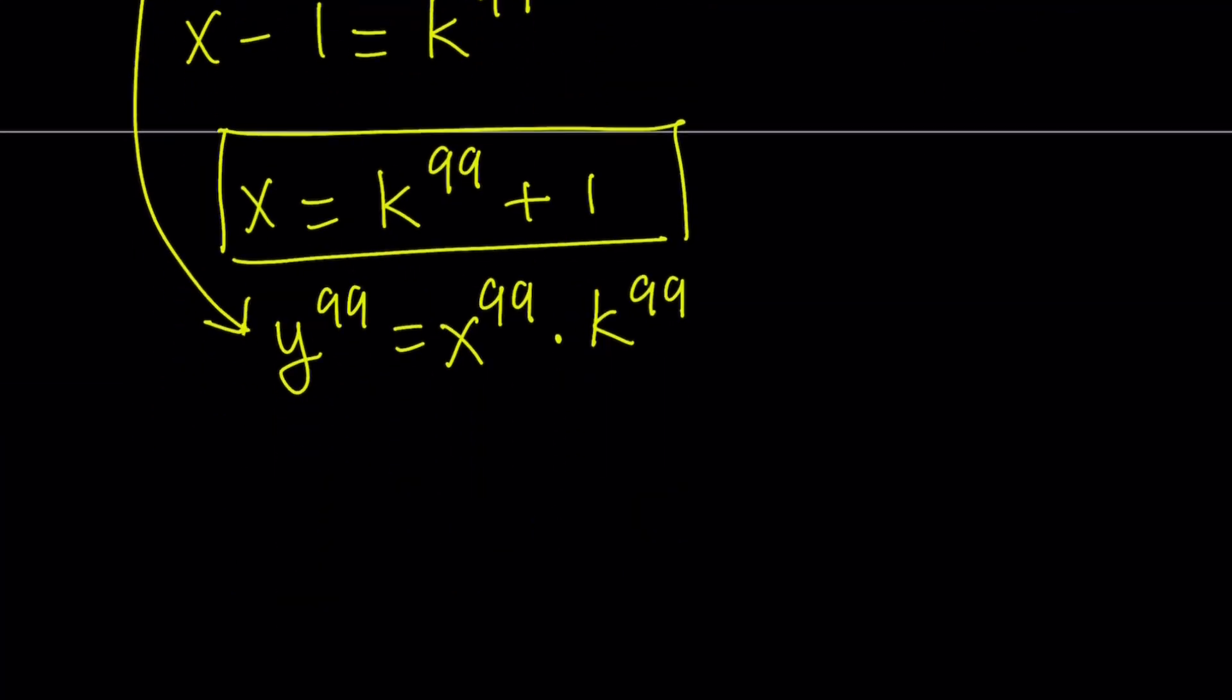Now, we can actually write the right-hand side as the 99th power of a product because of the rules for exponents. So I could just write it as xk to the power 99, and now I have the following. Y to the power 99 equals kx to the power 99.